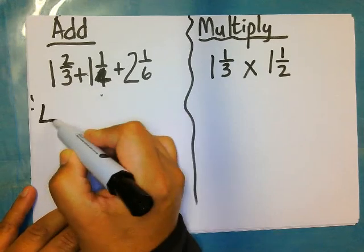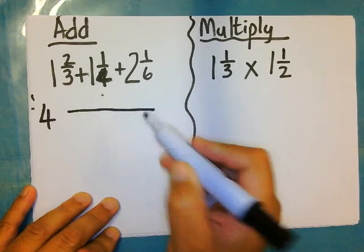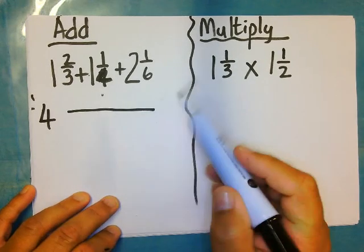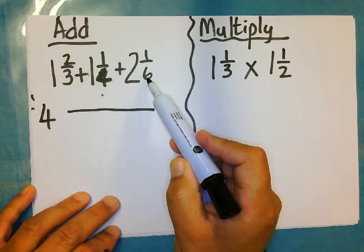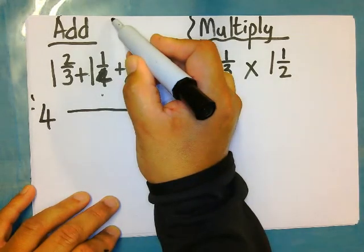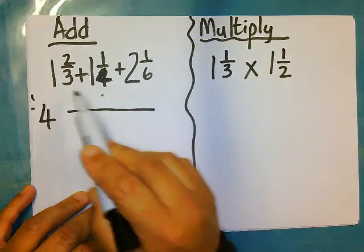And then I must get my LCM, my new denominator. The quickest way is to take the biggest one, and you write down the multiples of the biggest one. Six, can three go into six? Yes. Can four go into six? No, so it's not six.